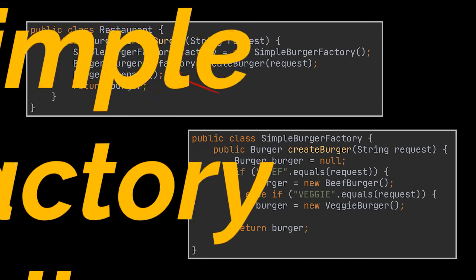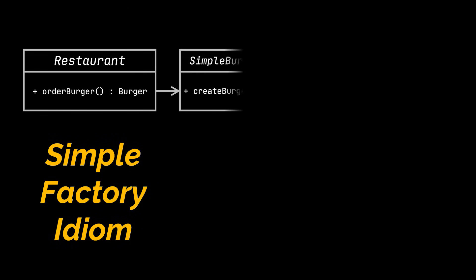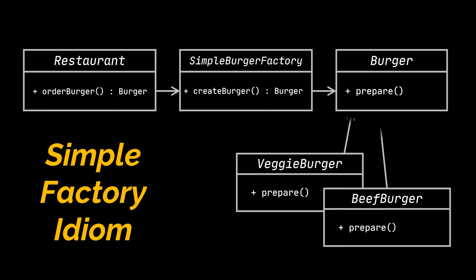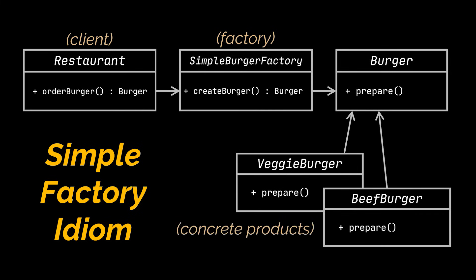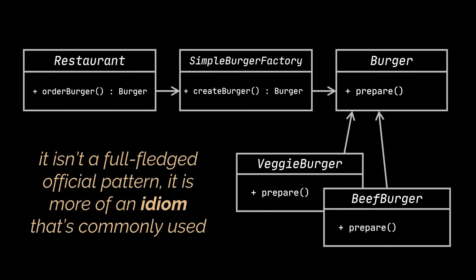We call this design the simple factory pattern, and our example can be represented by the class diagram you see in front of you. It starts with the client of the factory — in our case, the restaurant class itself. Then we have our factory, which is the only place where the concrete type of burgers is known. And then we have our concrete products, the burgers our restaurant delivers via the app we are implementing. All concrete products must implement the same interface or abstract product. Now, one thing to note is that the simple factory we've been discussing is not a full-fledged official pattern — it is more of an idiom that's commonly used.